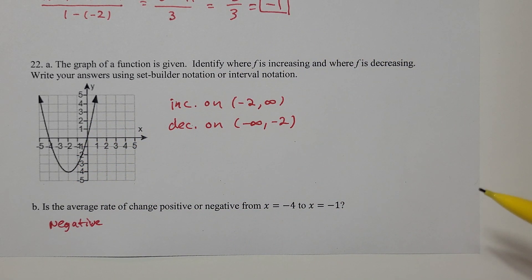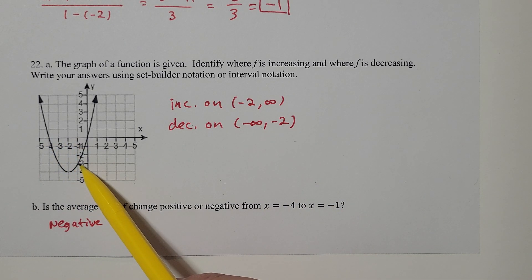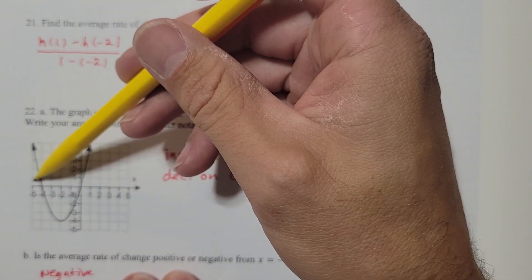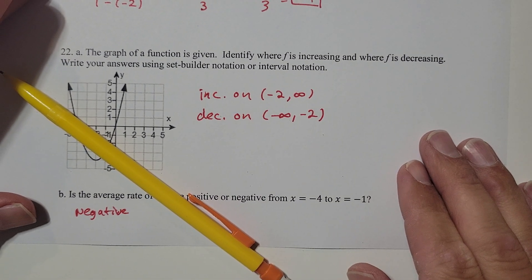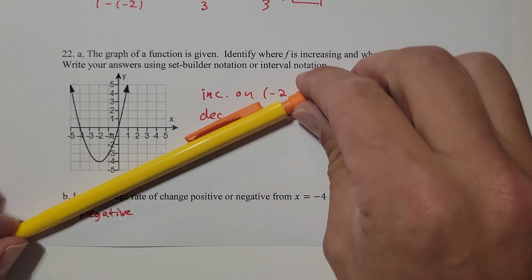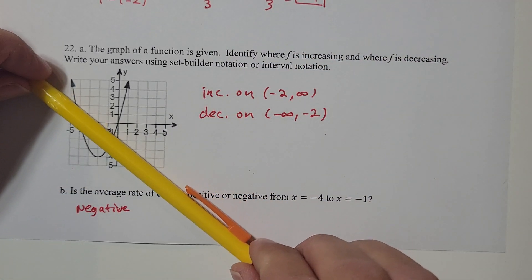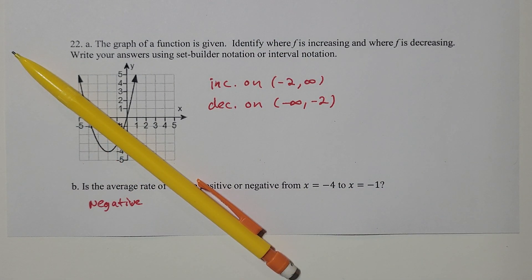Part b asks whether the average rate of change is positive or negative from x = -4 to x = -1. The average rate of change is the same thing as the slope of a line. Drawing a line from -4 to -1, it's slanted in the downward direction, which has a negative slope. A line slanted the other way has a positive slope. You can construct a capital N for negative with the negative-slope case.